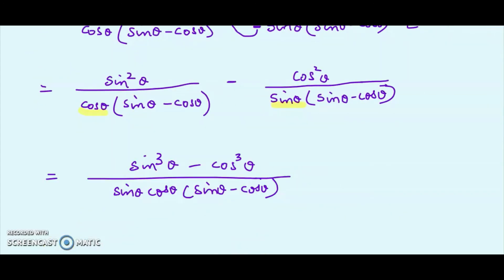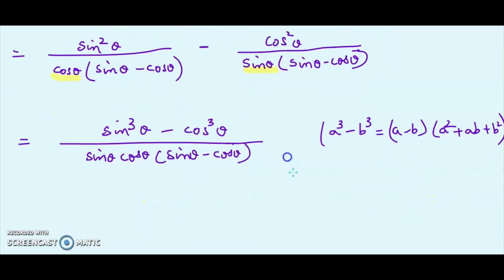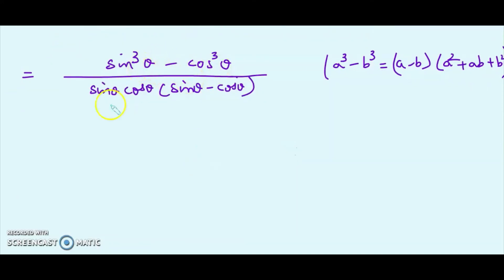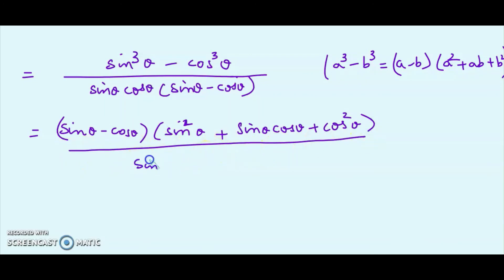The third crucial step is applying the identity a³ − b³ = (a − b)(a² + ab + b²), where a = sin θ and b = cos θ. The numerator becomes (sin θ − cos θ)(sin²θ + sin θ cos θ + cos²θ), all divided by sin θ · cos θ · (sin θ − cos θ). The (sin θ − cos θ) factors cancel.